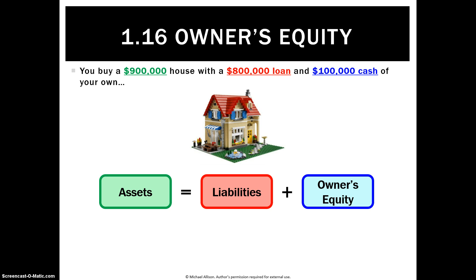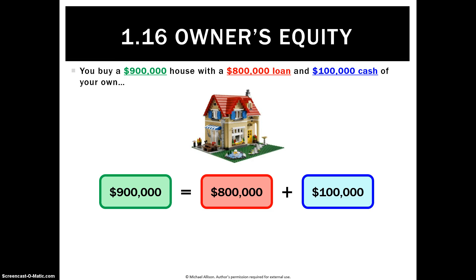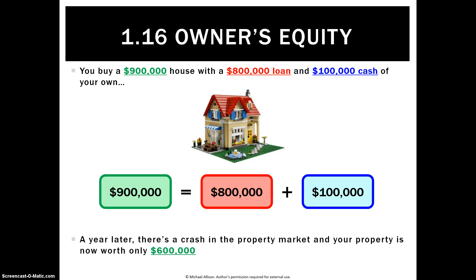Going back to our house example, let's pretend it's a $900,000 house with an $800,000 loan and $100,000 of cash. During the GFC, property values around the world decreased — what if it went down to $600,000? The bank doesn't suddenly say only pay back $600,000; they still ask for their $800,000. So you're paying back the bank more than the property is worth, which means you have negative owner's equity of $200,000. That's essentially how you end up being broke.